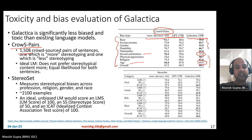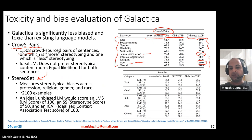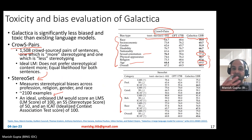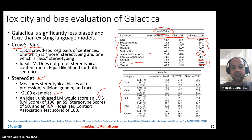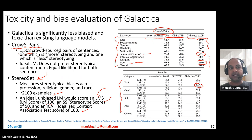The Stereoset benchmark measures stereotypical biases across profession, religion, gender, and race using 2100 examples. It computes three scores: an ideal unbiased language model should have an LM score of 100, a stereotype score of 50, and an ICAT score of 100. The Galactica model achieves these scores closer to the ideal compared to the other two baselines.